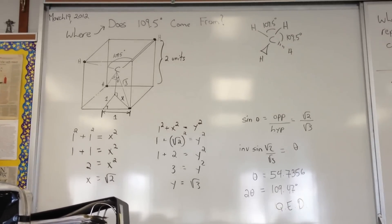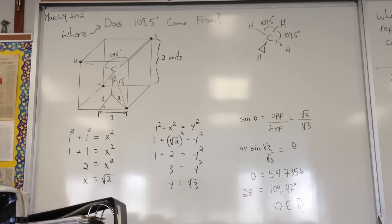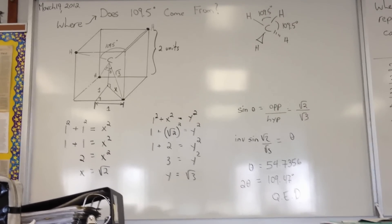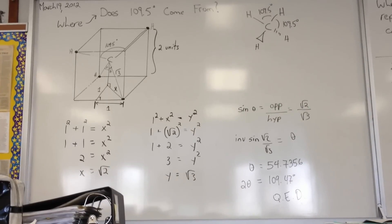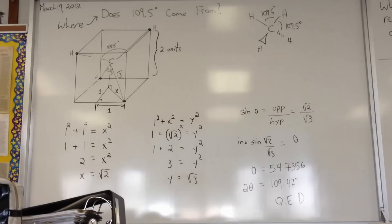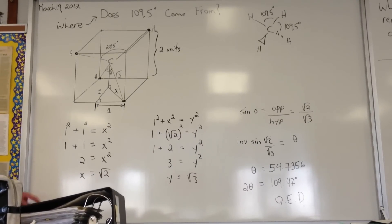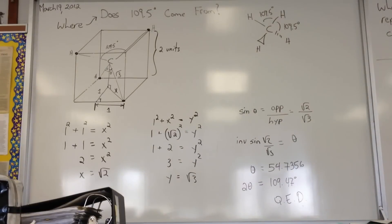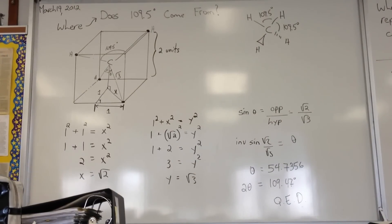One of the proofs I'd like to share that relates to hybridization of orbitals is: where does the 109.5 degree bond angle come from? As far as other angles are concerned, most people have no problem understanding 90 degree bond angles or 120 degrees, but 109.5 seems a little mysterious.